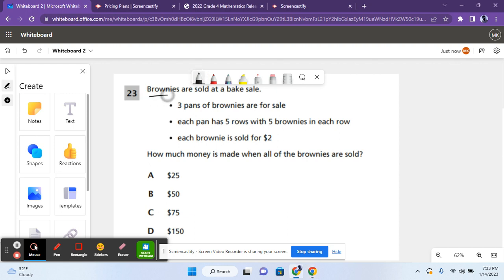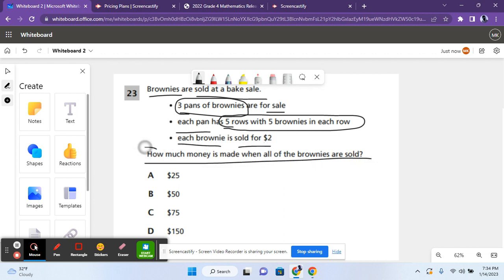For number 31 it says brownies are sold at a bake sale. Three pans of brownies are for sale. Each pan has five rows with five brownies in each row. Each brownie is sold for two dollars. How much money is made when all the brownies are sold?